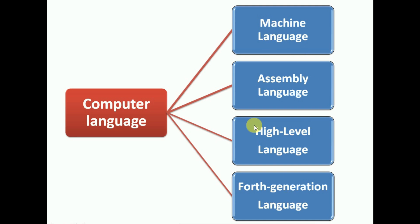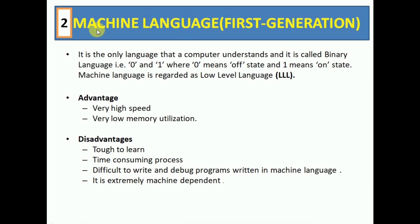The first is machine level language, used in the first generation of computers. It is the only language that a computer understands — zero and one — so it is called binary language. Zero means off state and one means on state. Everything the computer understands, whether video or pictures, is stored in zeros and ones.